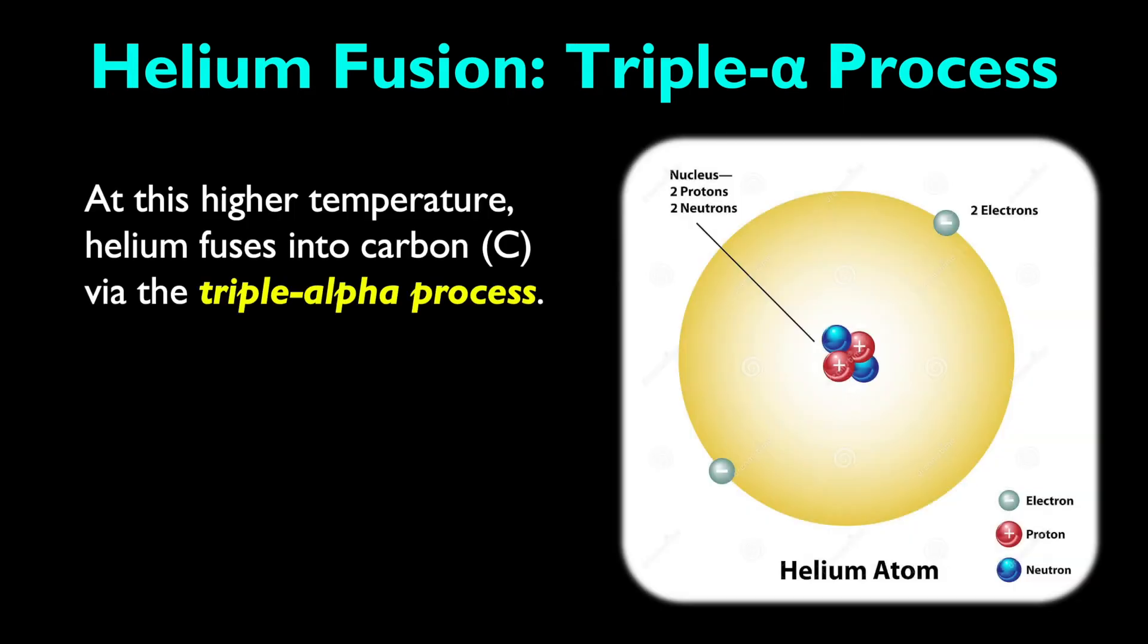To understand helium fusion, we must learn about the triple alpha process. Just as the proton-proton chain was the specific type of thermonuclear fusion of hydrogen into helium, the triple alpha process is the specific reaction that fuses helium with other helium nuclei to create heavier elements like carbon. At these higher temperatures, helium fuses into carbon via the triple alpha process.